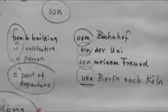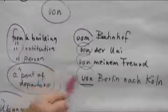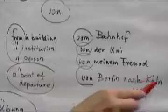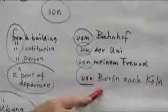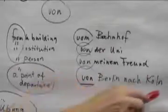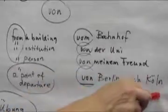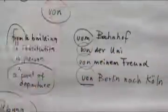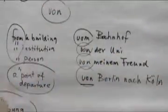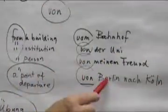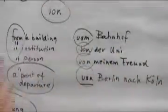For example: ich fahre von Berlin nach Köln. Berlin is the point of departure, Köln is the place of arrival. So: von Berlin nach Köln.